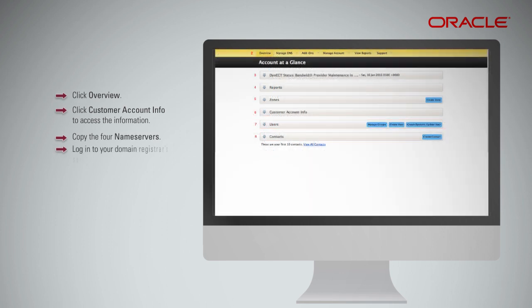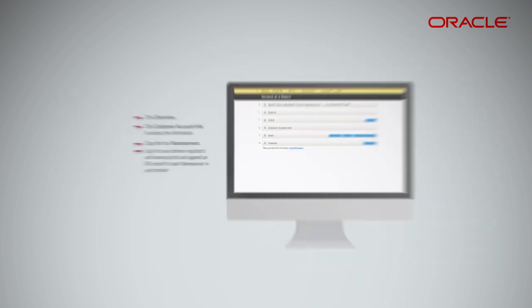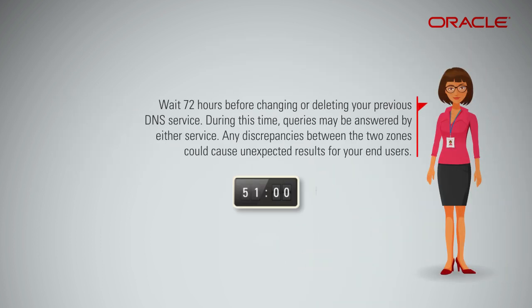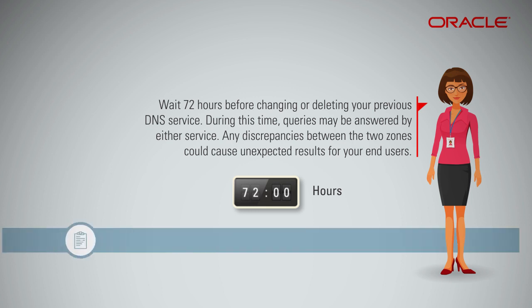It is very important to add NS records for all 4 nameservers at your domain's registrar. Log into your domain registrar's self-service portal and append an NS record for each name server in your domain. Wait 72 hours before changing or deleting your previous DNS service. During this time, queries may be answered by either service, and any discrepancies between the two zones could cause unexpected results for your end users. You can check DNS resolution for your domain by entering your domain name in the name field and pressing enter.